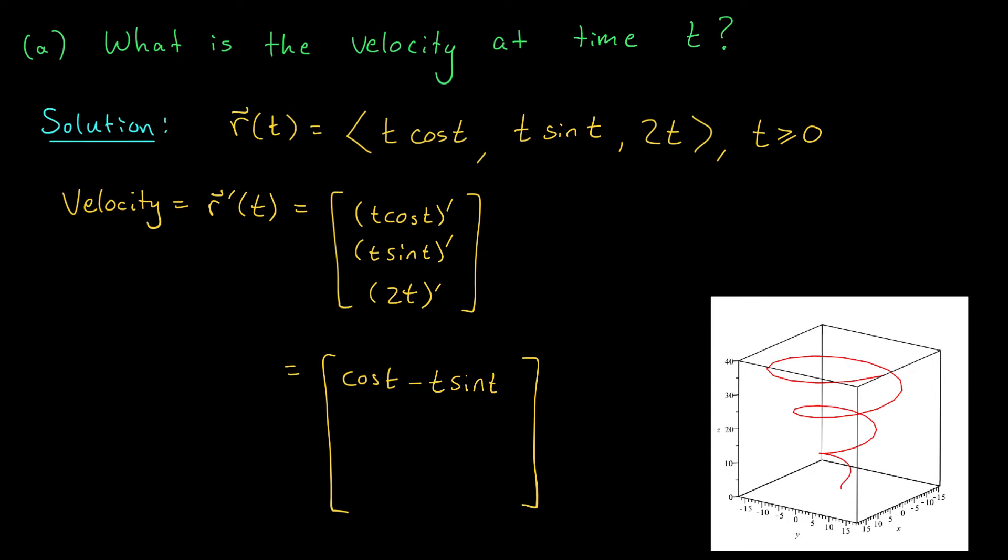In the second component, something similar happens. The derivative of t is 1, and I multiply by sine t. Then I add t times the derivative of sine t. That's plus t cos t. The derivative of the third component is just 2. And there you have it. It's that simple. This is the cow's velocity vector at time t seconds.